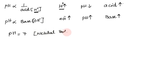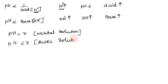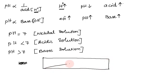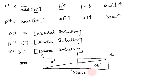Neutral solution has pH exactly 7. A pH value less than 7 indicates an acidic solution. A pH value greater than 7 indicates a basic solution. The weak acid pH is on the pH scale below 7.